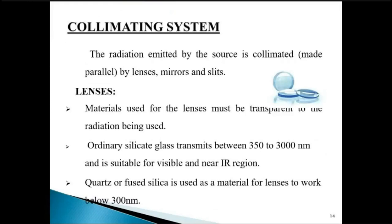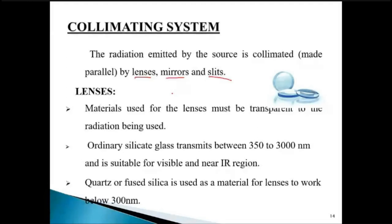After the source, we move to the collimating system. The collimating system basically includes lenses, mirrors, and slits — these three components are responsible for handling the UV radiation produced by the source. For lenses, if the instrument is for UV, they must be made of quartz or fused silica. If it is a visible instrument, they can be made of glass — the material used for lenses must be transparent to the radiation being used.